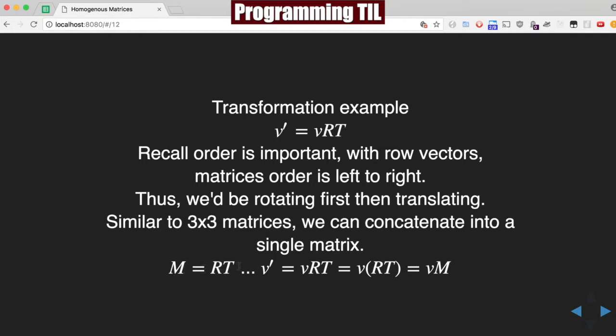So if we have a matrix M equals RT, then the formula above V prime equals VRT, we can replace the RT with M, so VM.